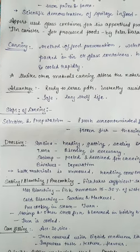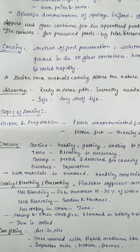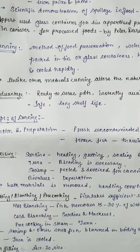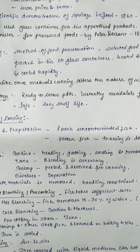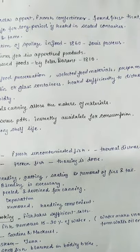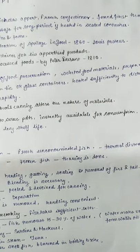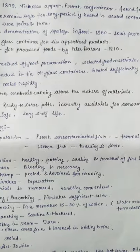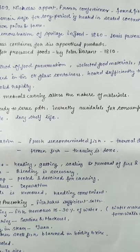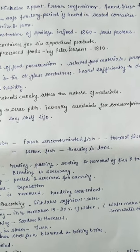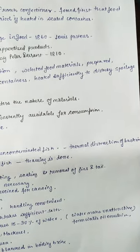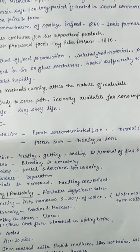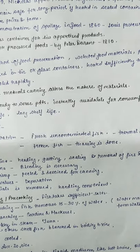There are some steps of canning. The first step is selection and preparation. We should use fresh, uncontaminated fish. Thermal destruction of bacteria is the principle of canning, as mentioned earlier.